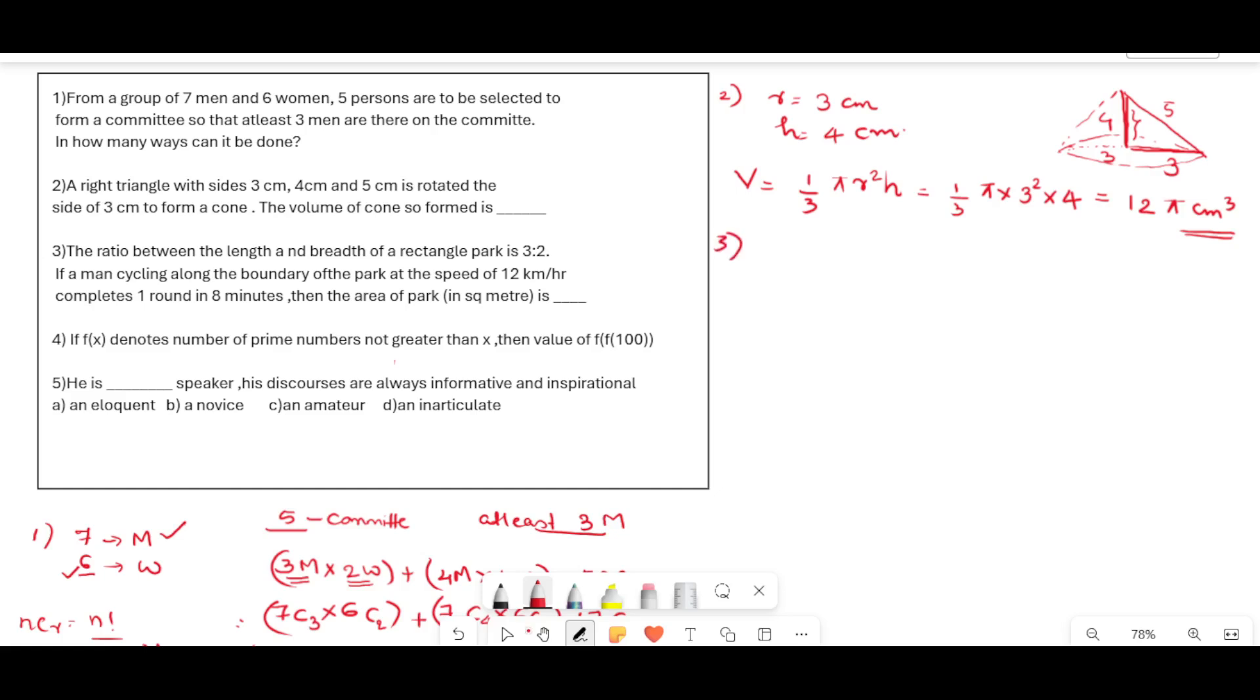Next we will see the third question. The ratio between the length and breadth of a rectangular park is 3:2. If a man cycling along the boundary of the park at the speed of 12 km/h completes one round in 8 minutes, then the area of park is? Ratio of length and breadth is given, therefore length let it be 3x and the breadth let it be 2x.